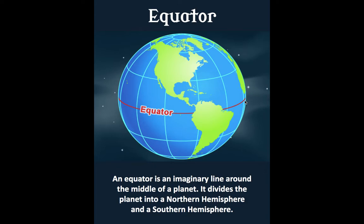The first way we're going to chop it up is by drawing a line from west to east, or east to west. We call that line the equator. An equator is an imaginary line around the middle of a planet. Think of that part of the word — equa — means middle, or equal. It divides the planet into a northern — that'd be the top half in this case — and a southern hemisphere.